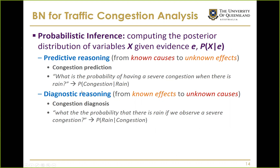An example predictive question: what is the probability of severe congestion when there is rain? The other direction is diagnostic reasoning, going from known effects to unknown causes — congestion diagnosis. For example: what is the probability that there was rain, given that we observe severe congestion?